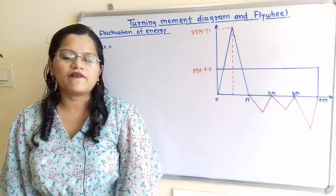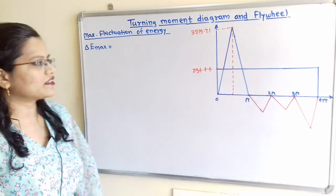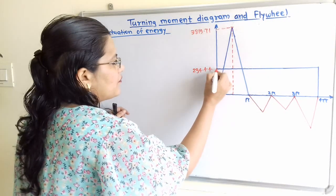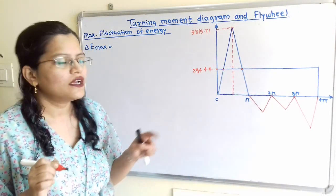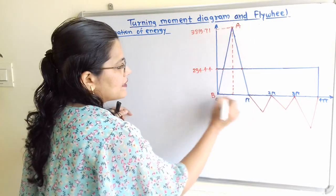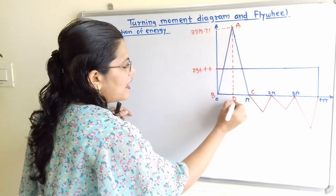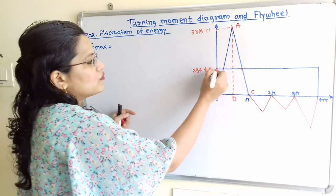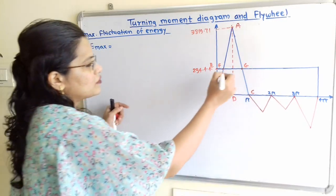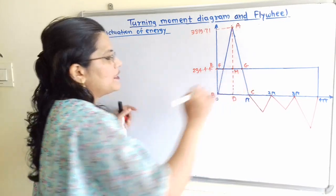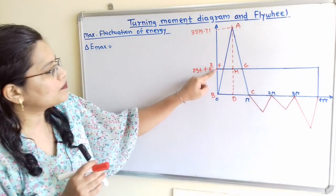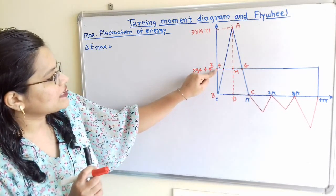Now we calculate the maximum fluctuation of energy. We first identify the points of intersection between the driving torque curve and the load torque line. The three intersection points are labeled E, F, and G, and the height point is D. The triangle vertices are labeled A, B, C, with H as another intersection point. We need to determine which region gives the maximum fluctuation of energy.